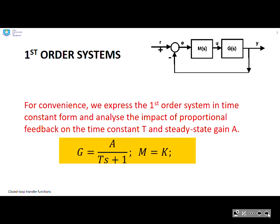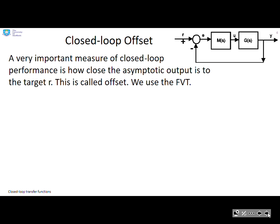For first-order systems, for convenience, we express the system in time constant form. I've written it as capital A, the steady state gain, over Ts plus one, where T is the time constant. We're going to assume the compensator is just a proportional gain.